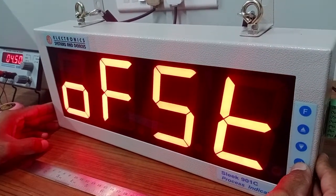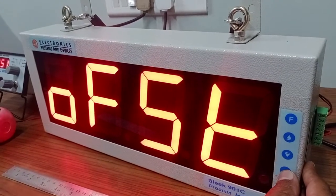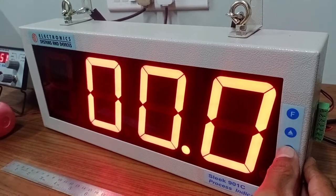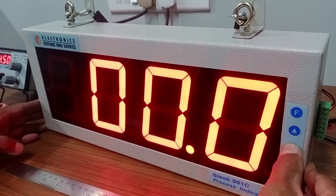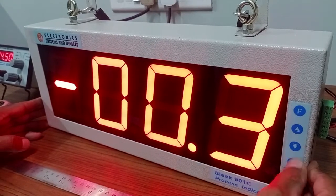This is offset. If there is some error in the sensor, we can correct it by this offset. We can keep it negative also, from minus 125 to plus 125 we can give the offset. We'll keep it zero now.